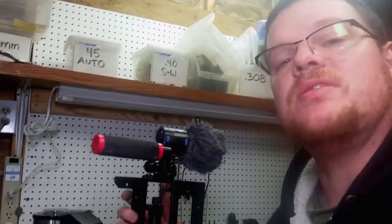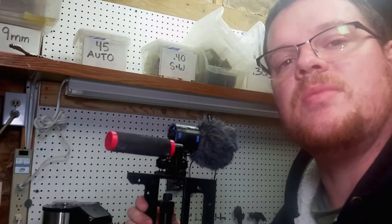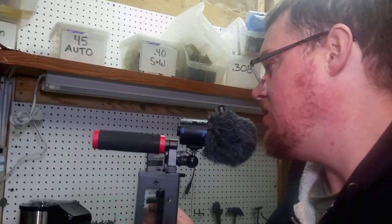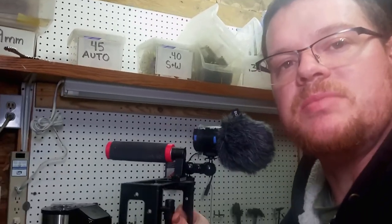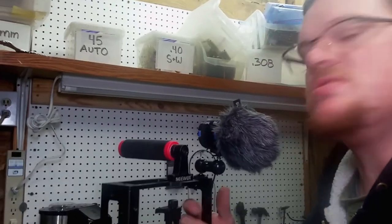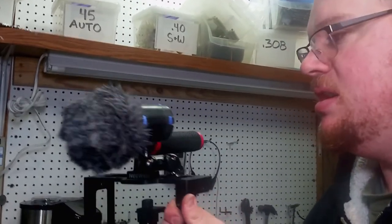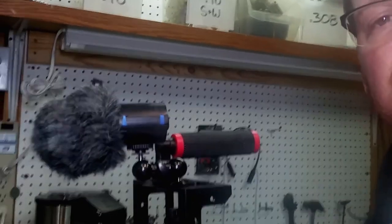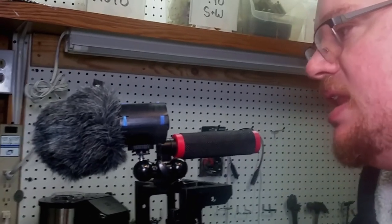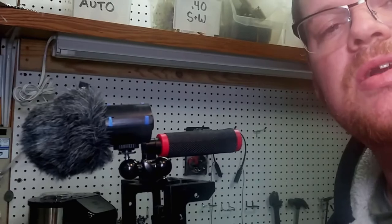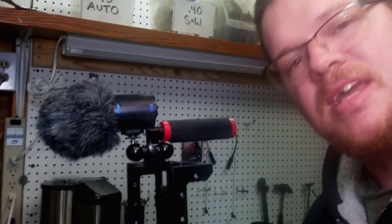All right guys, I'm pretty excited with how this shock mount turned out for my Boya shotgun mic. So grab yourself some rubber bands and a piece of scrap pipe and you can make yourself a little cheap mount for your shotgun mic. Appreciate it if you like seeing little hacks like this. Subscribe below, give us a thumbs up. Thanks for watching.